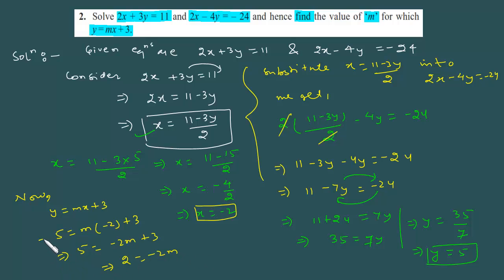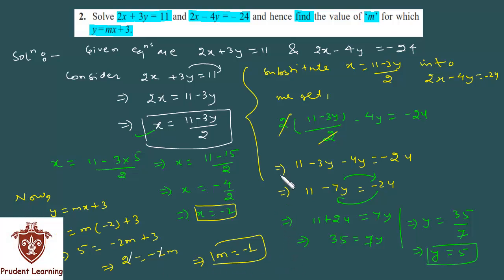Yahan implies that ka symbol lagana zaroori hai, which gives us m as minus 1. Aap dekh sakte hain 2 se 2 yaha pe cancel ho jata hai, toh m aapko mil jata hai as minus 1. Toh finally aapko m calculate karna tha, toh aapne nikal diya as minus 1. So this completes our solution. Let us now move on to third question.